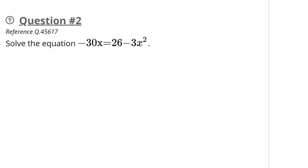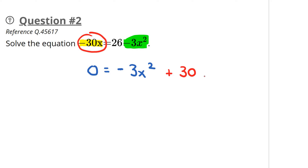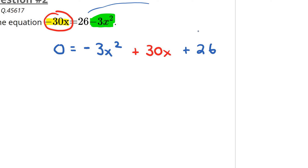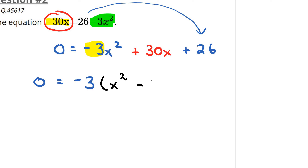Let's move on to the next one — another question where we've got to solve the equation. I see a negative 30x there, so we're going to bring that to the other side. My leading term is negative 3x squared. So this will be negative 3x squared, then bring this negative 30x over to become positive 30x, and then we have the positive 26 hanging around. We set this equal to zero and complete the square. Let's factor out this negative 3 from the first two terms, which gives x squared minus 10x.